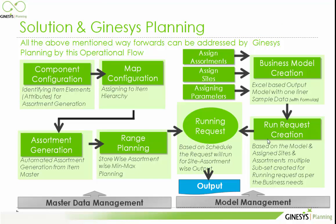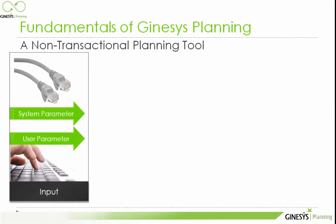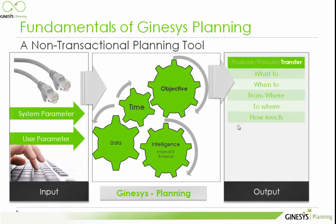We have completed the basic fundamentals of Genesis Planning. The system uses input from system parameters and user-defined custom parameters, along with ranging configuration and map configuration. All those parameters are used in Genesis Planning with some intelligence, and from that data we get the answers to the fundamental questions of retail as output in Genesis Planning.